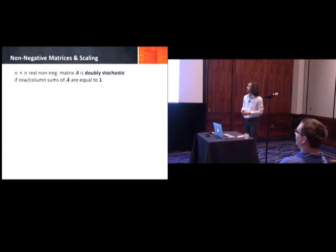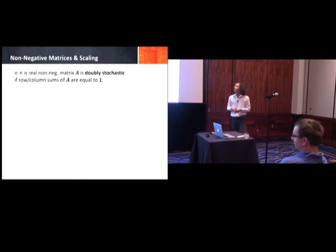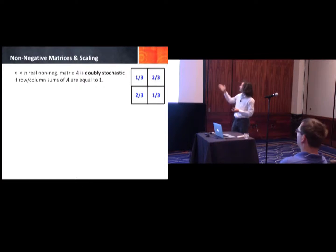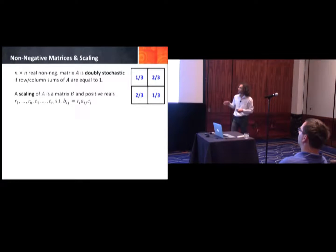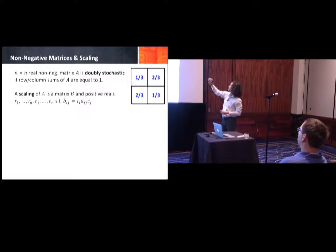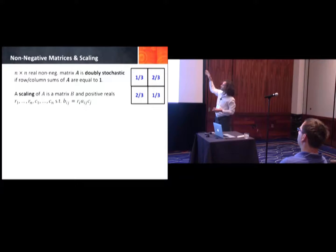Let's begin with non-negative matrices and scaling. If I give you an n-by-n real non-negative matrix A, we say that this matrix is doubly stochastic if its row and column sums are all equal to one. You can see that this example is a doubly stochastic matrix. Now, what is the scaling of a matrix? A scaling of A is a matrix B obtained by multiplying the rows by some positive numbers R₁ through Rₙ and the columns by positive numbers C₁ through Cₙ.